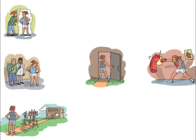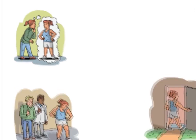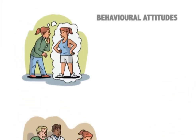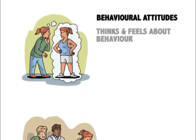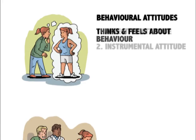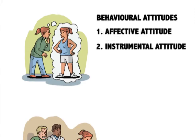According to the theory, the first predictor of intentions are behavioural attitudes. This relates to how a person thinks and feels about the behaviour, and reflects their expectations and evaluations of the behaviour. This can be split into two different aspects: affective attitude and instrumental attitude.